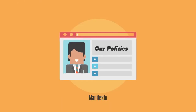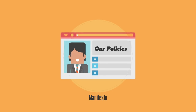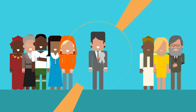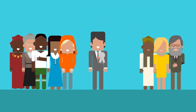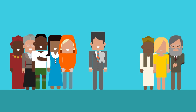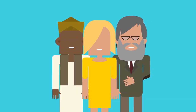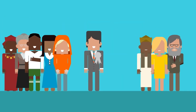Parties with candidates standing for election also write a list of everything they want to do if they win. This is called a manifesto. Once they've won an election, an MP represents all their constituents, including those who didn't vote or voted for someone else.